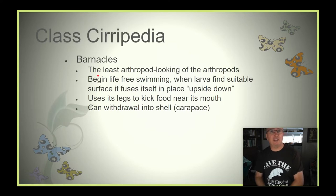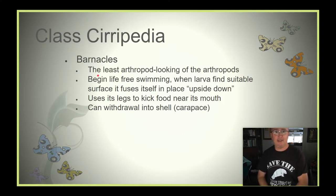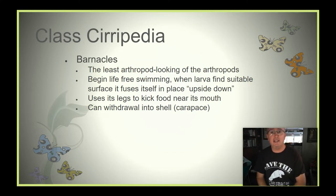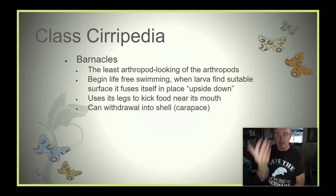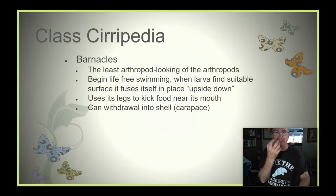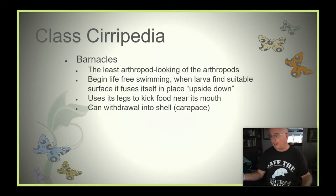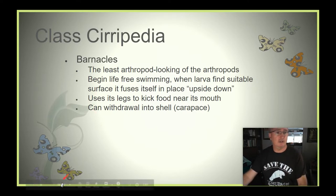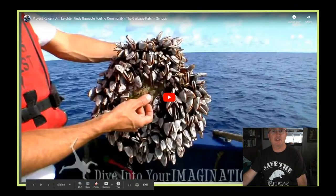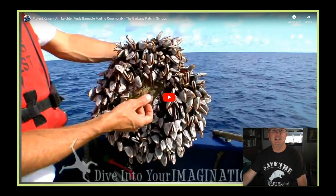Barnacles are the least arthropod-looking arthropods out there. Life begins as free-floating plankton in the ocean, and eventually they settle upside down on a hard substrate, form a shell around them, cement themselves to whatever structure they land on, and form their adult body. Most of us are familiar with what barnacles look like — these are gooseneck barnacles attached to a buoy that was floating around in the ocean.